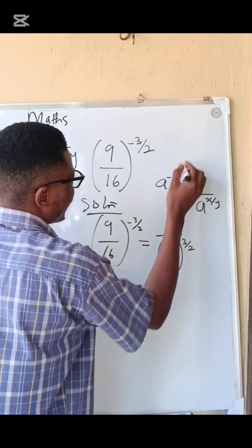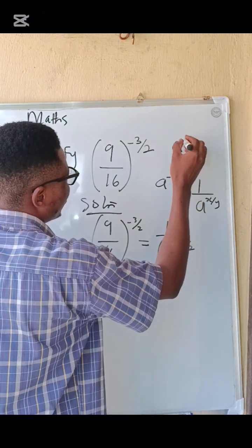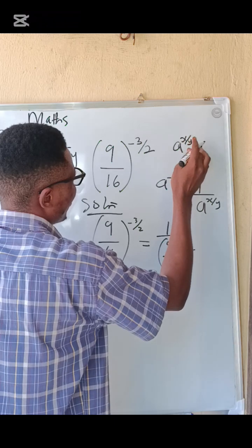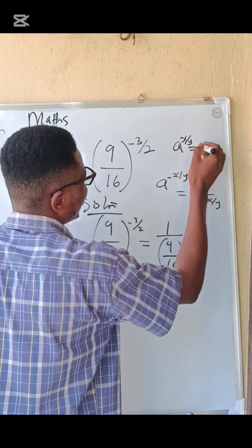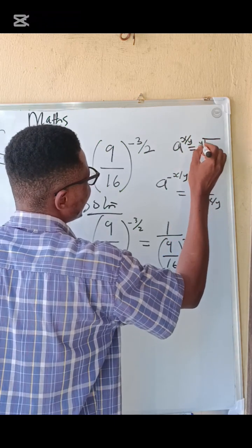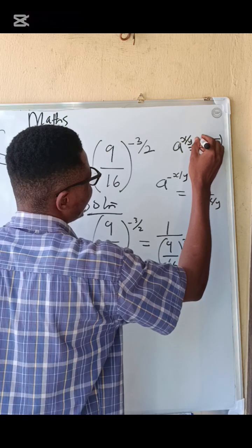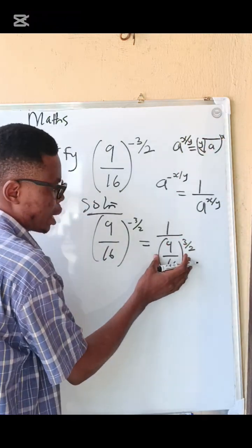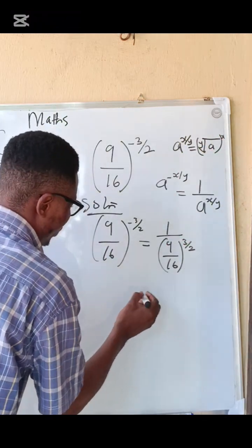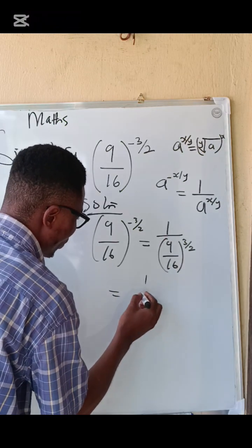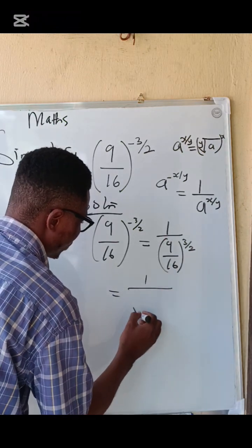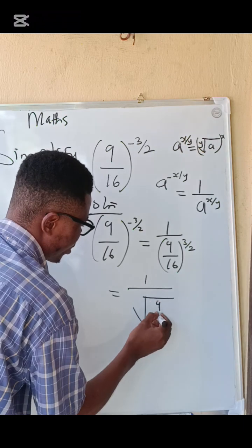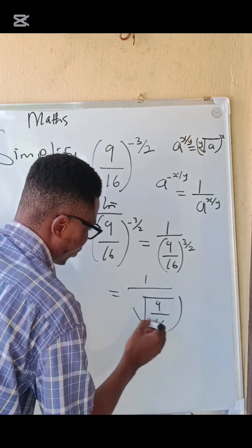Remember that in indices, a to the power x over y can also be written as the y-th root of a, raised to the power x. Applying that same rule here, we take the square root — because we have 3 over 2 — of 9 over 16.